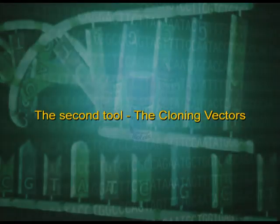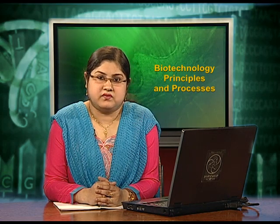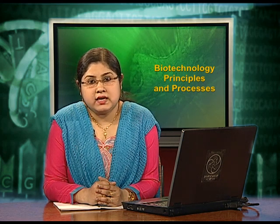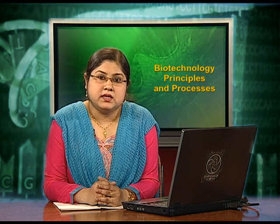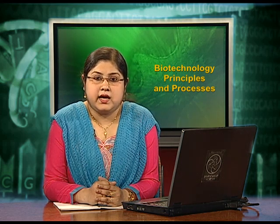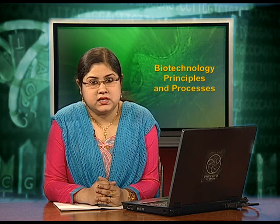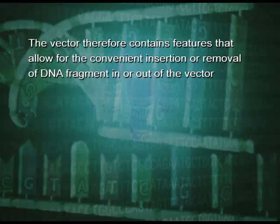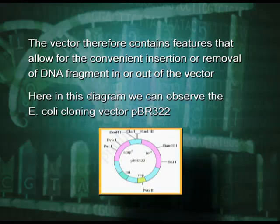The next tool of recombinant DNA technology is the cloning vector. A cloning vector is a small piece of DNA taken from a virus, a plasmid, or the cell of a higher organism that can be stably maintained in an organism and into which a foreign DNA fragment can be inserted for cloning purposes. The vector therefore contains features that allow for the convenient insertion or removal of a DNA fragment. In this diagram, we can observe the E. coli cloning vector pBR322.